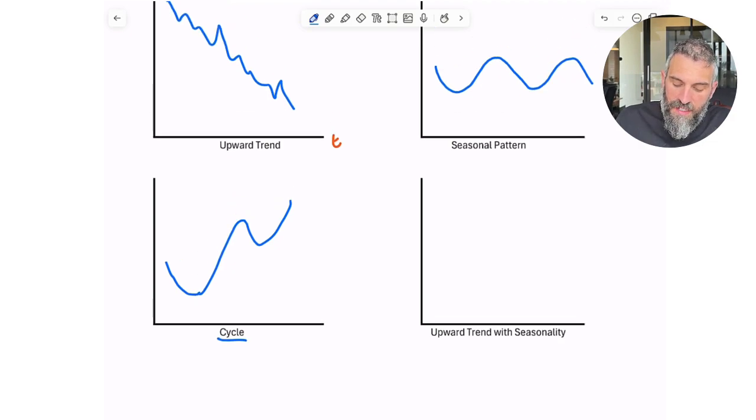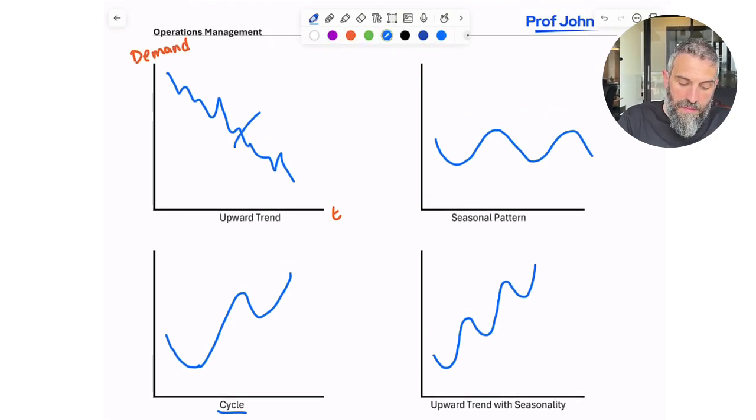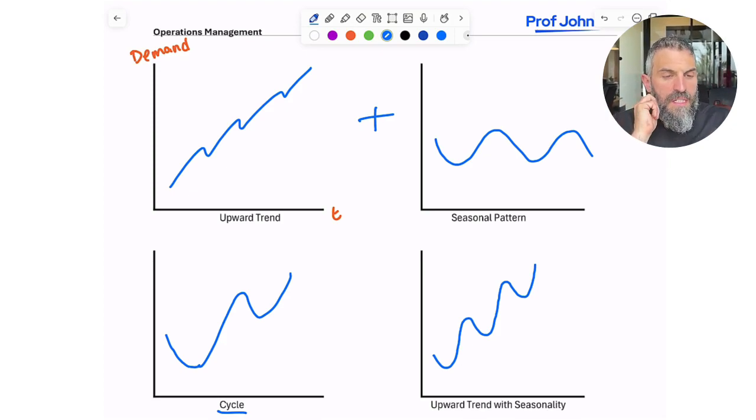And then an upward trend with seasonality would be something like this, where it's seasonal, so it's wavy, but it is generally moving in an upward way. If I had taken an upward trend but then combined it with something seasonal. Try and imagine a winter coat, which would be seasonal, that has become more and more popular over time. Each winter, demand will spike up. And then in the summer, it'll come back down. But then the following year, it'll be even higher, because it's becoming more popular.